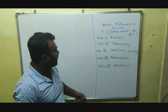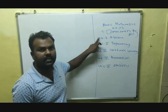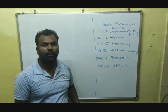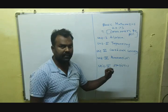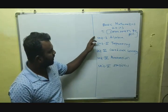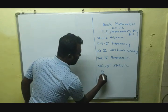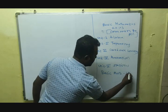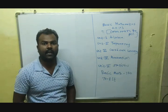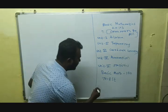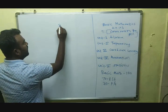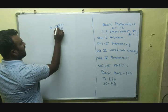For this paper, there are total five units. First unit is algebra, second unit is trigonometry, third unit is coordinate geometry, fourth is mensuration, and fifth one is statistics. I have already discussed about these units in our last session. This paper is total for 100 marks. Out of 100, 70 is for the end semester examination and 30 marks is for progressive assessment.